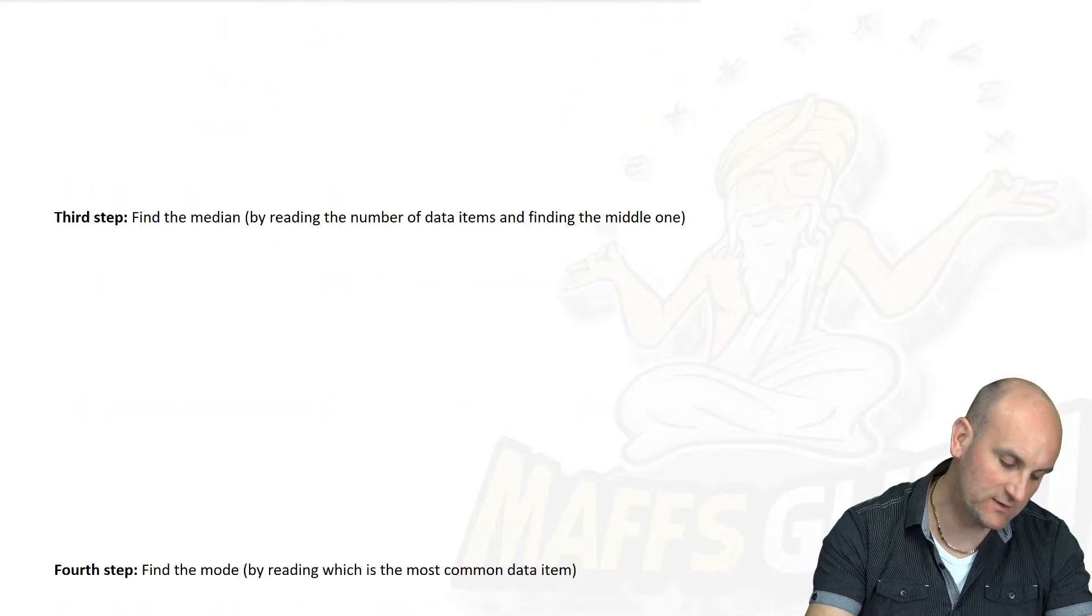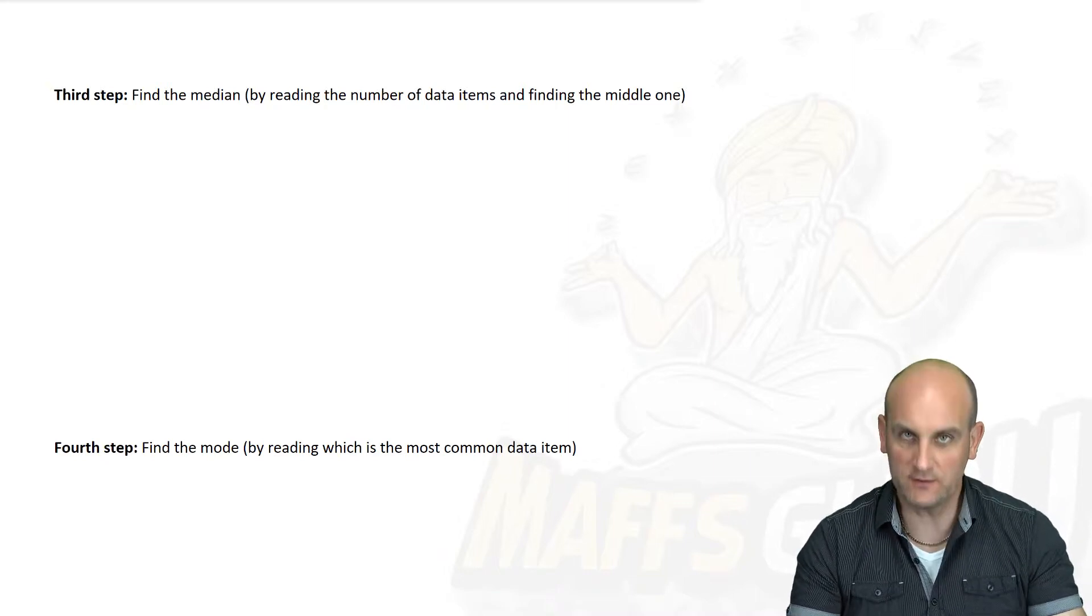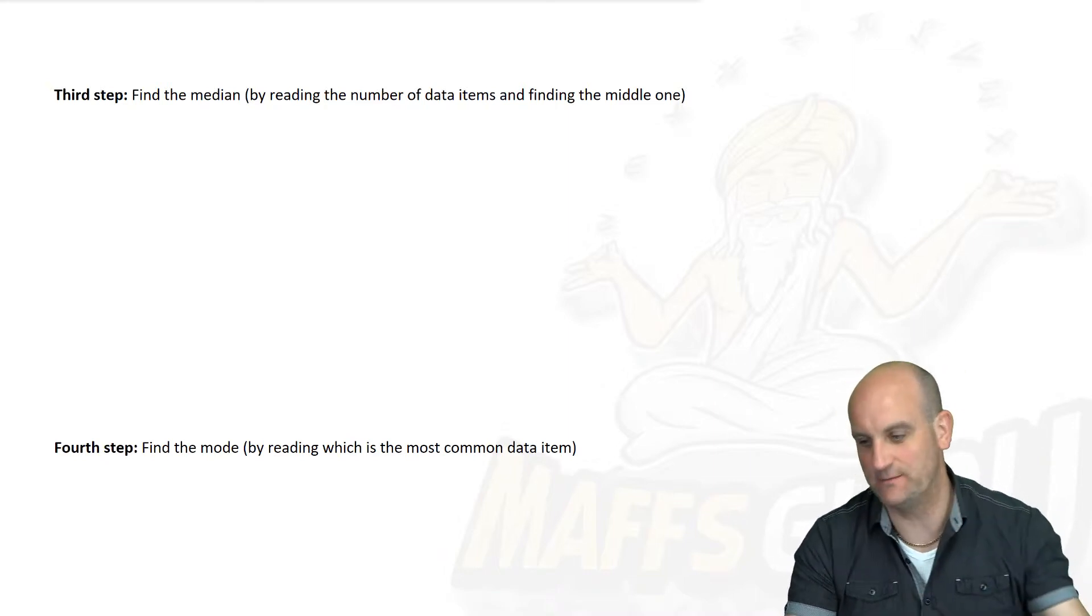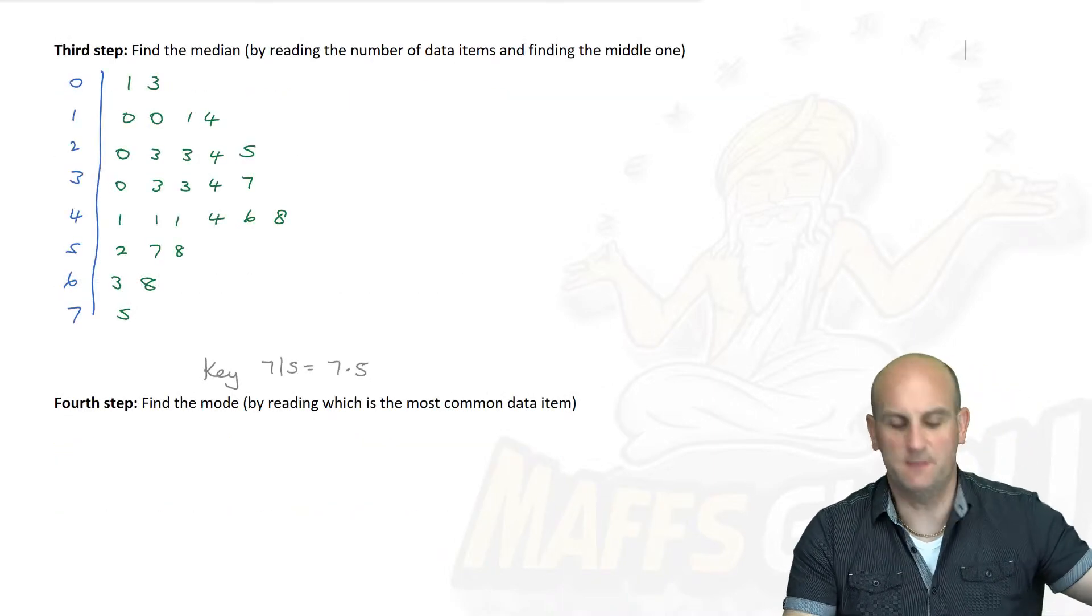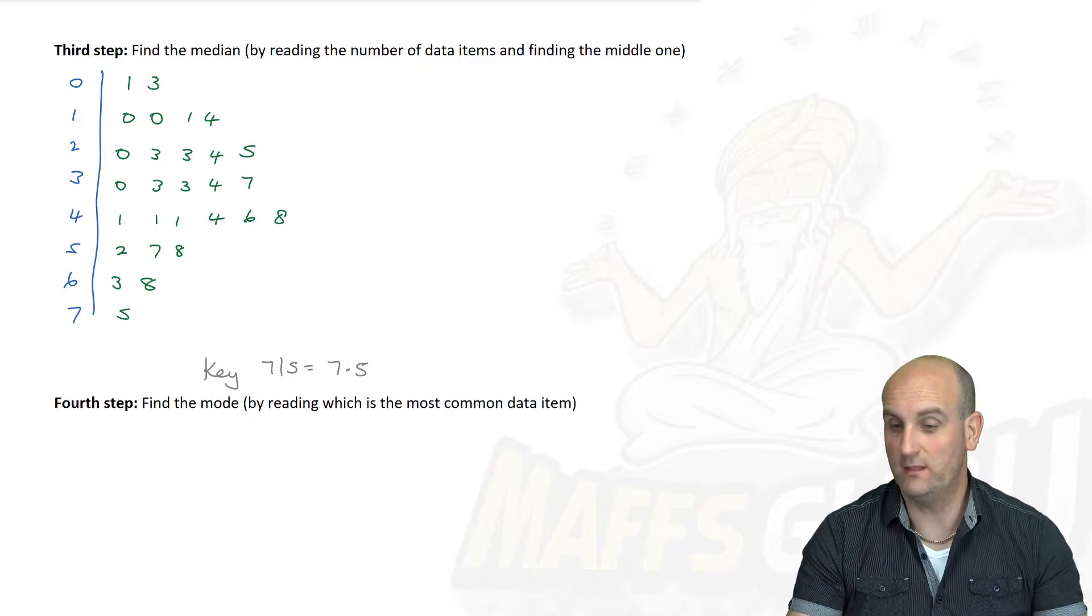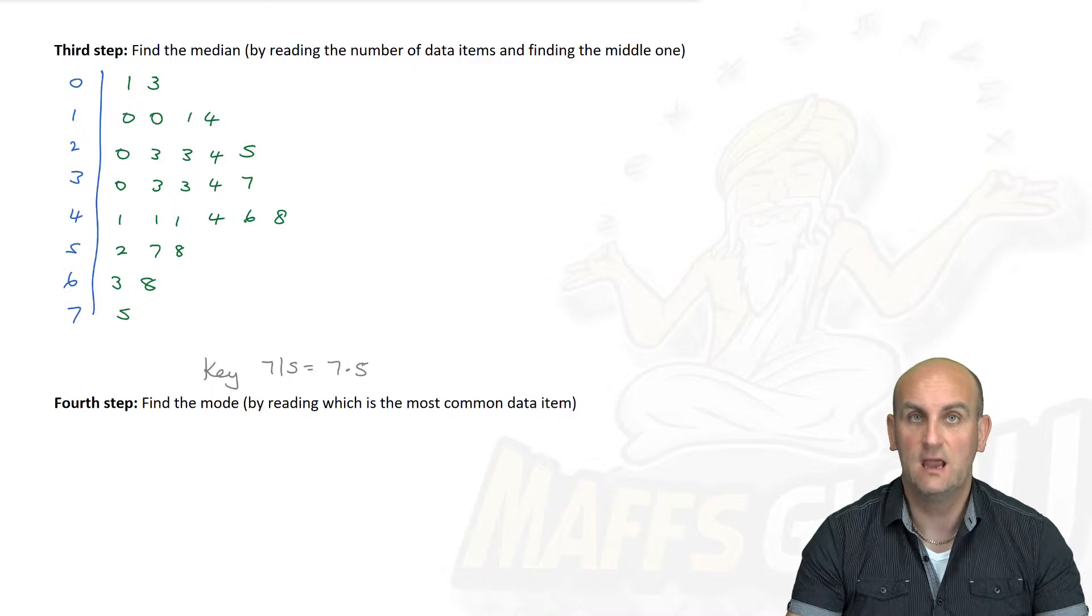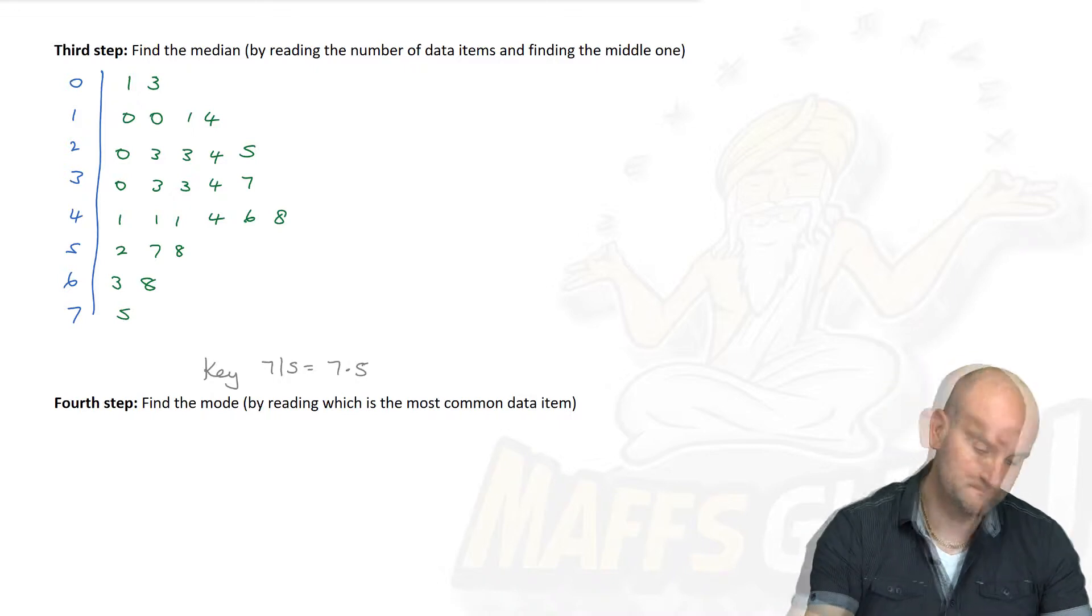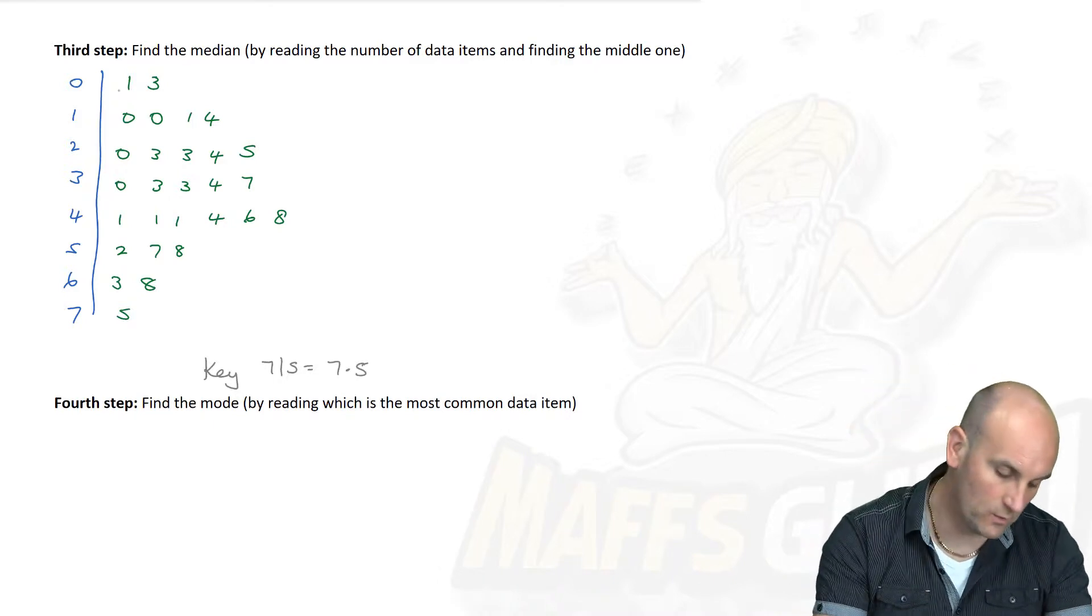The next part of the question says, can you now find the median for me? Of course we can find the median. Let's bring my data back. I want to find the median. The median is my middle number. Easiest way to do that is cross numbers off the ends until I meet in the middle.